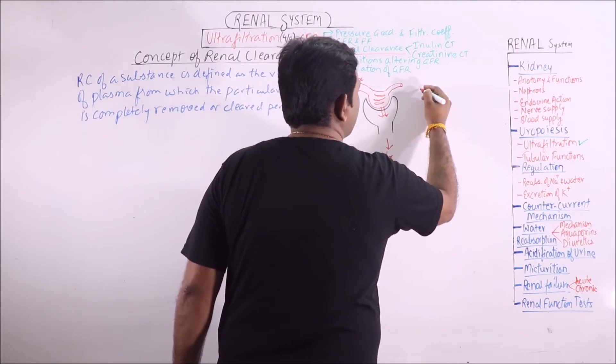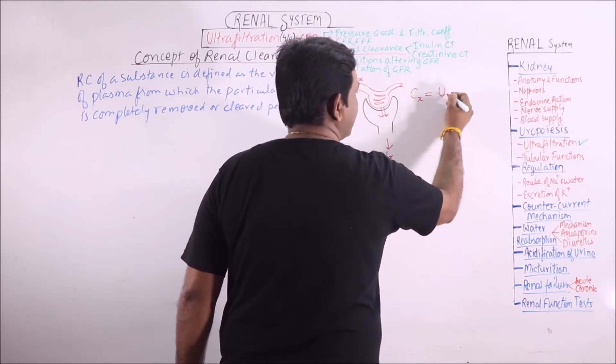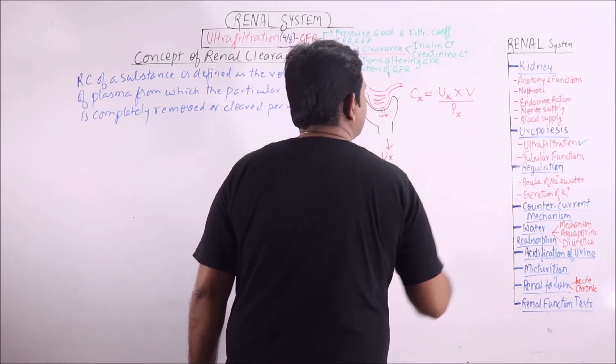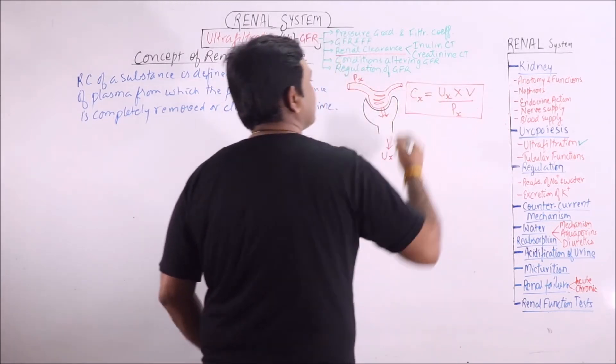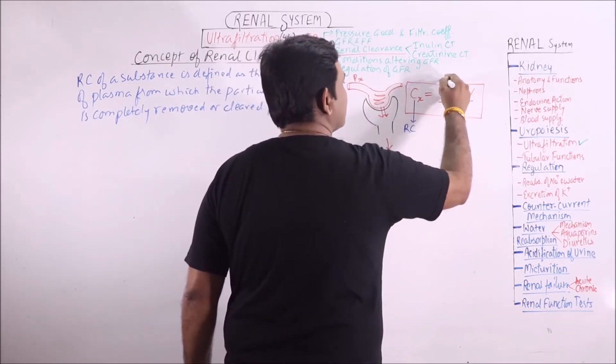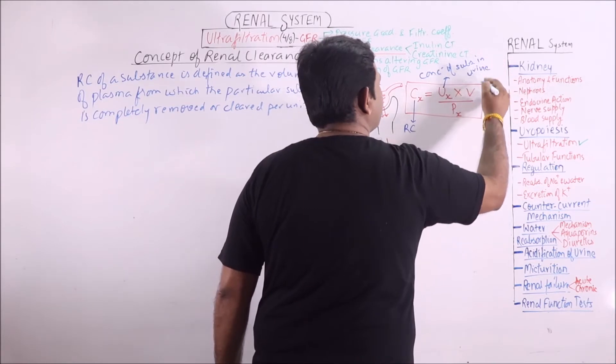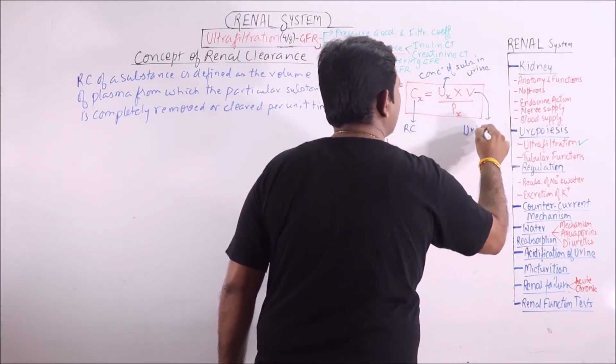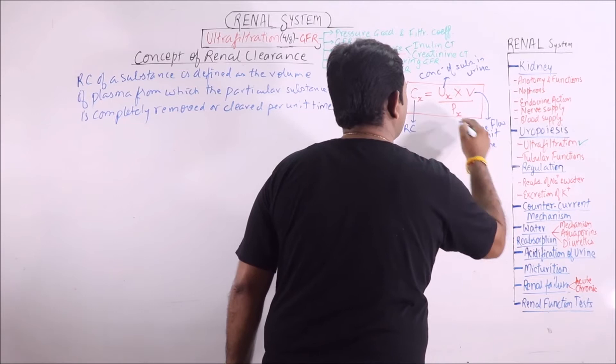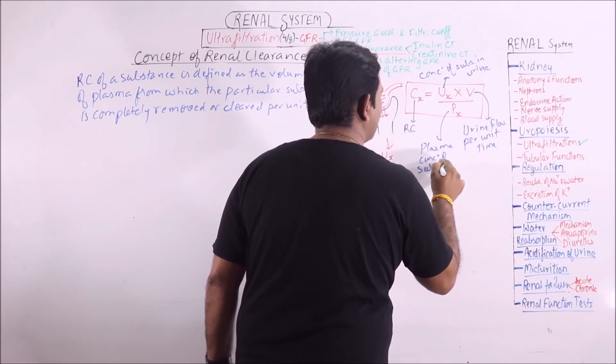If we calculate the clearance of that particular substance, it will be equal to the concentration of substance in urine times the flow of urine per unit time, divided by the concentration of that substance in plasma. This is renal clearance of that substance. This is concentration of substance in urine, this is urine flow per unit time, and this one is the plasma concentration of that substance.